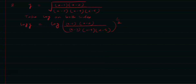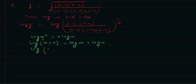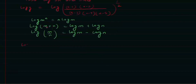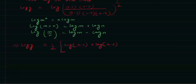Using logarithmic identities — log m^n = n·log m, log(m·n) = log m + log n, and log(m/n) = log m − log n — we write: log y = (1/2)[log(x−1) + log(x−2) − log(x−3) − log(x−4) − log(x−5)].